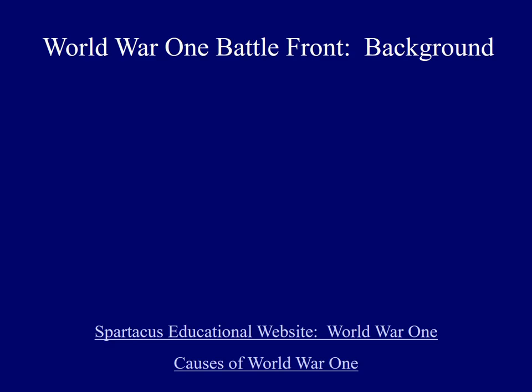There were a variety of long- and short-term causes of World War I. Among others, they include the rapid rise of Germany and Italy, which upset the balance of power in Europe, imperialism, an arms race, the alliance system, and nationalism. The spark which started the war was the assassination of Archduke Franz Ferdinand, the heir to the throne of Austria-Hungary. For additional information on the causes of World War I, you may click on one or both of the hyperlinks below.